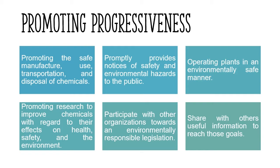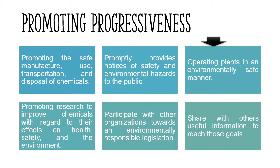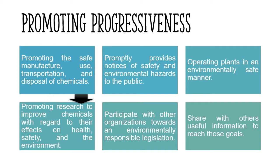Promoting a progressive attitude can be done via various steps, including carefully handling any dangerous chemicals, announcing any dangerous or hazardous activities and taking all precautions ahead of time, encouraging an environmentally friendly mode of operation, supporting and encouraging research that empowers environmental safety and the safety of the public, helping and collaborating with other entities towards a better environment, and always sharing your findings and best practices so that other people can benefit from them.